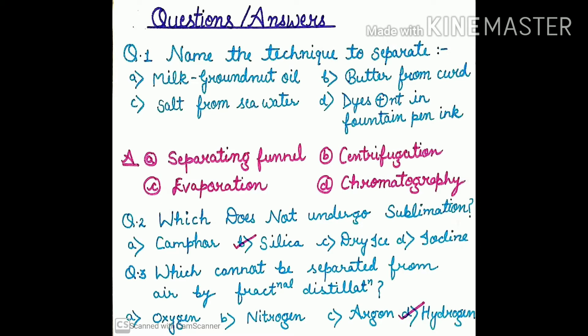Question number 3: which cannot be separated from air by fractional distillation? Options are oxygen, nitrogen, argon, and hydrogen. By the fractional distillation technique, we separate miscible liquids. We separate the components present in air on the basis of their boiling points. So oxygen, nitrogen, and argon can be separated. But hydrogen cannot be separated.